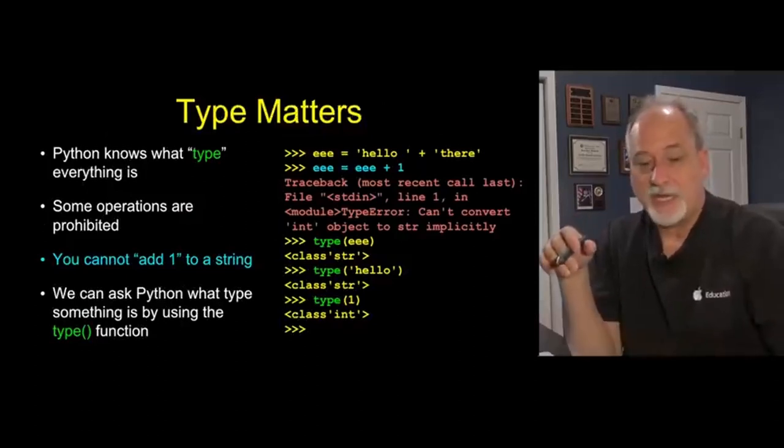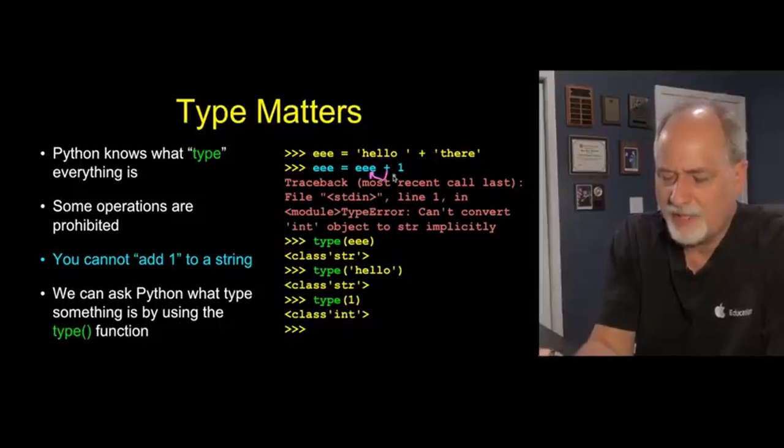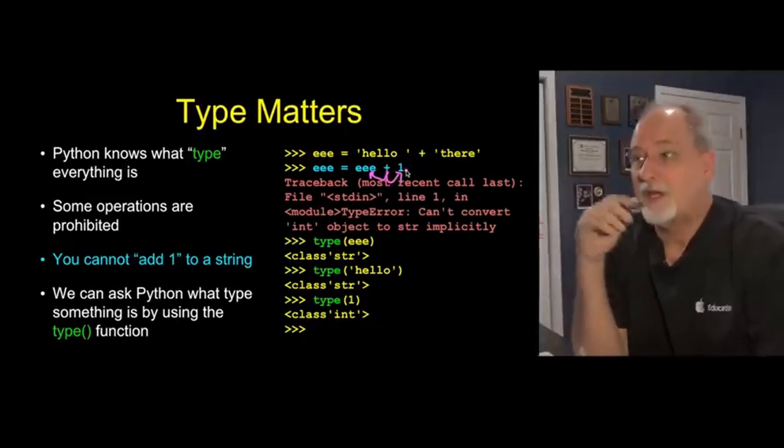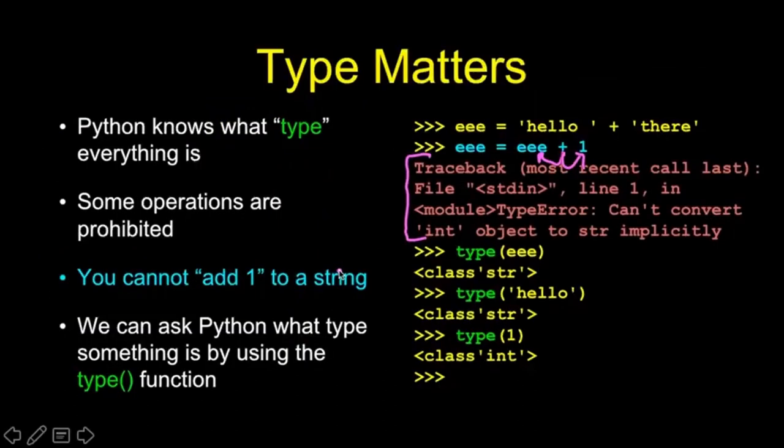And so, sometimes type can get us in trouble. So here we have eee, which is hello there, because we've concatenated these two strings together, and now we're adding 1. And the problem now is that it looks on one side and says that's a string, and that's a number, and says I don't know how to do that. This is another one of those annoying errors that you think that somehow Python doesn't like you, but it just is confused. Traceback always means I quit. It means I stopped running because I've become confused.